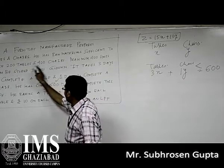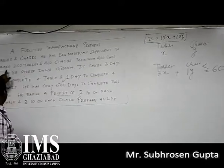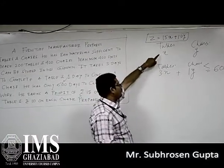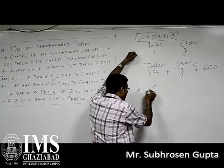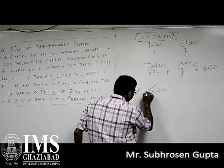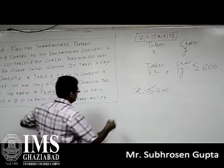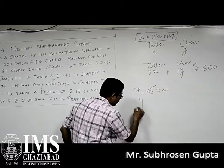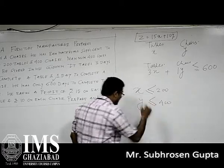Now, what about 200 and 400? He has raw material sufficient to make 200 tables. We are going to make X tables, so the raw material constraint means X will be less than or equal to 200 tables. And for chairs, number of chairs prepared will be Y — either equal to 400 or less than 400, so Y ≤ 400.